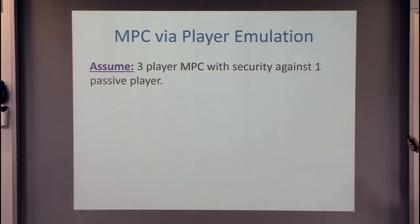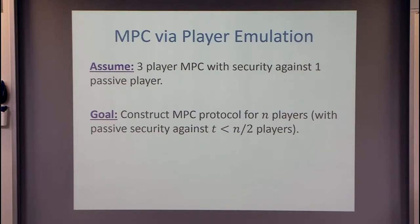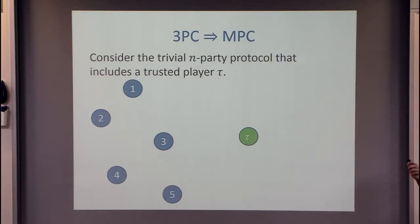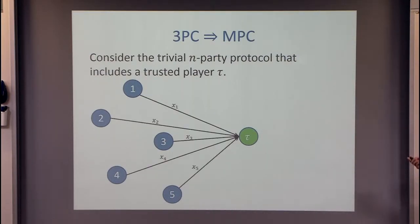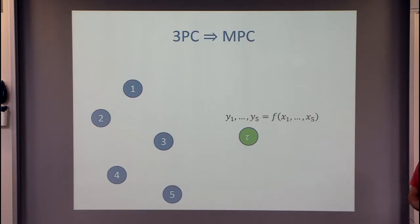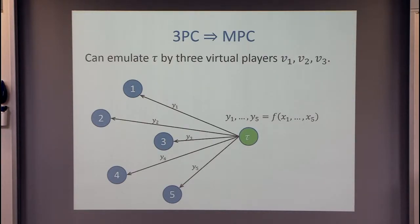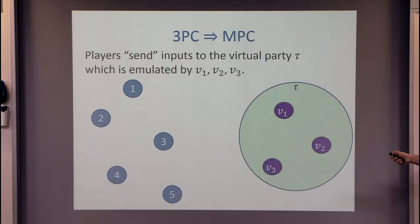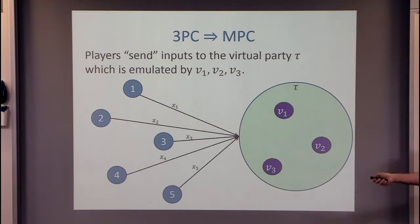We're assuming a three-player MPC secure against one player, and we want to construct an MPC protocol for N players with passive security against strictly less than half. Our starting point is the most trivial protocol: a trusted player Tau. All players send their inputs to Tau, Tau computes the output and sends back the results. The idea now is to emulate this trusted player Tau by three new virtual players v1, v2, and v3.